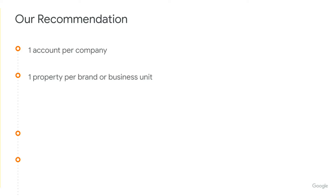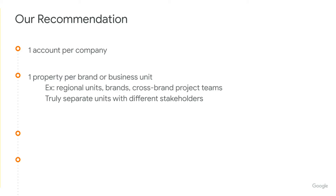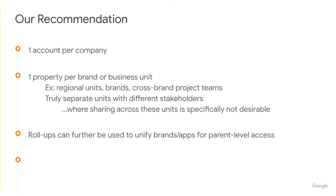Second, we recommend one property per brand or business unit — so this would be truly a separate team, different brand, or business line within a broader company. We do mean truly separate, because subproperties are created for specific teams to get access to specific sets of data. So if there is overlap, we'd actually recommend combining that. Rollups should be used to further unify the data, so if you have the need for both a subset of people to see a subset of data and a combined view, we'd recommend one property per brand and then a rollup above that.